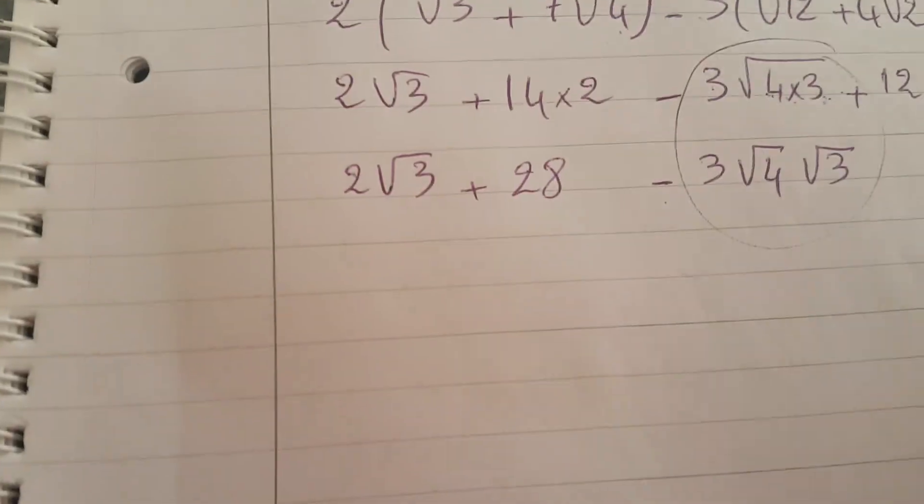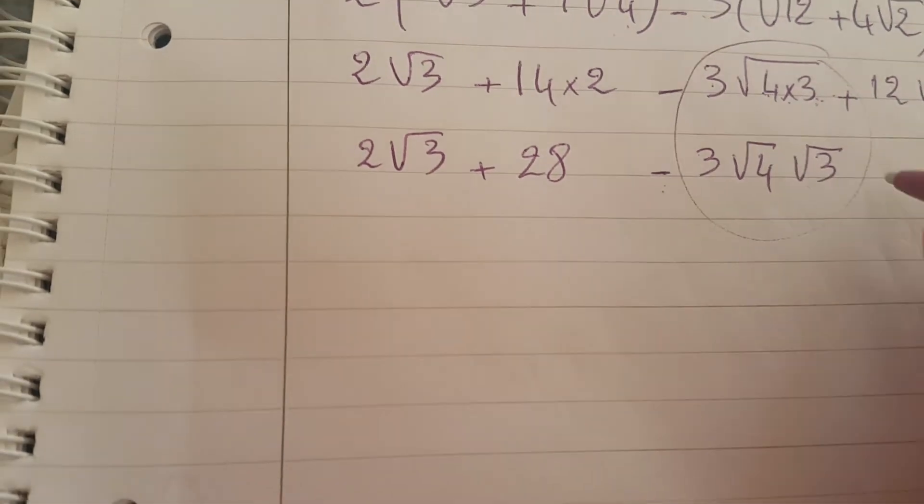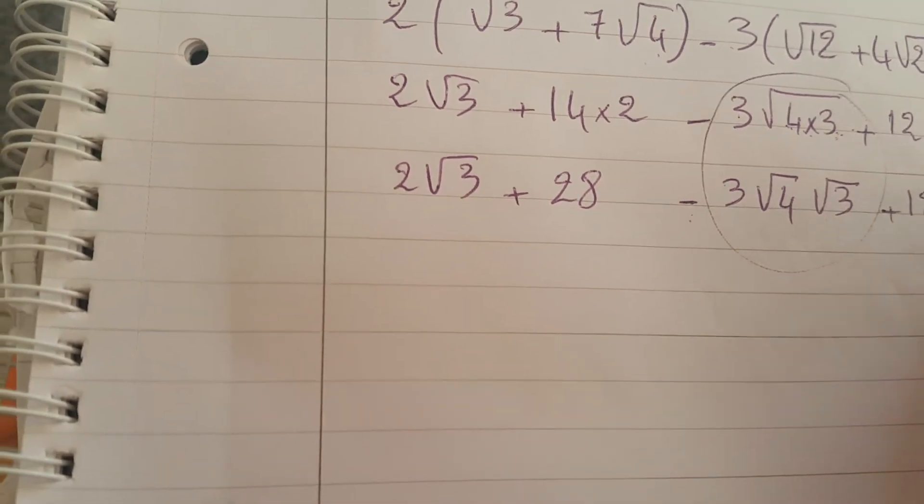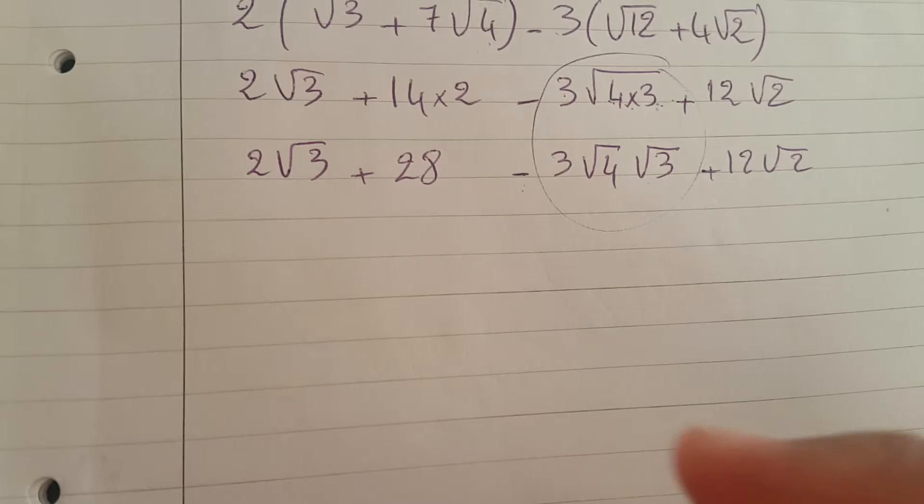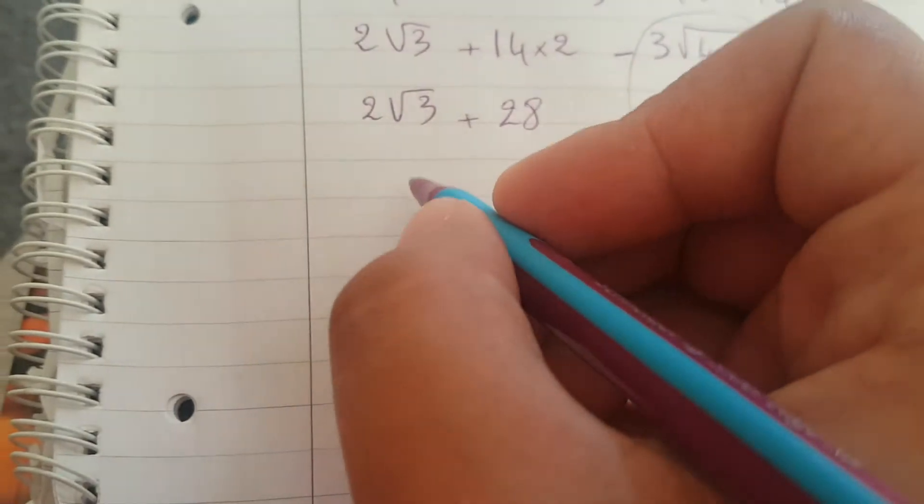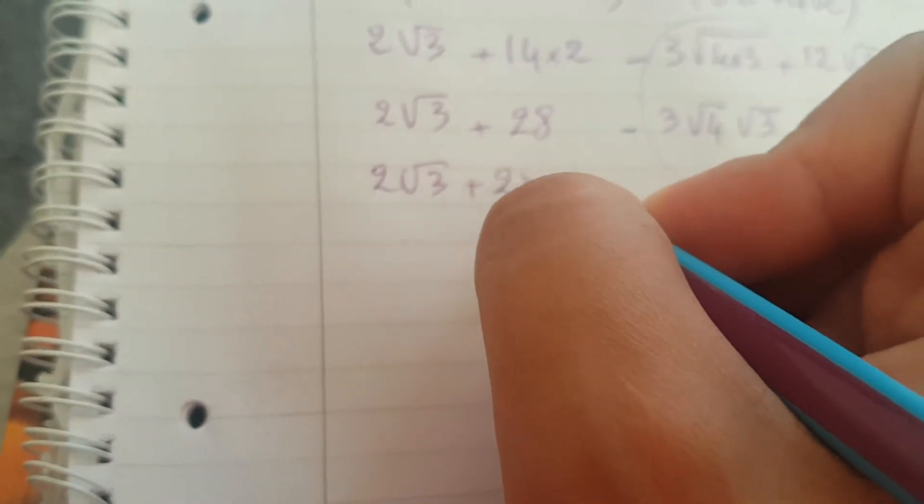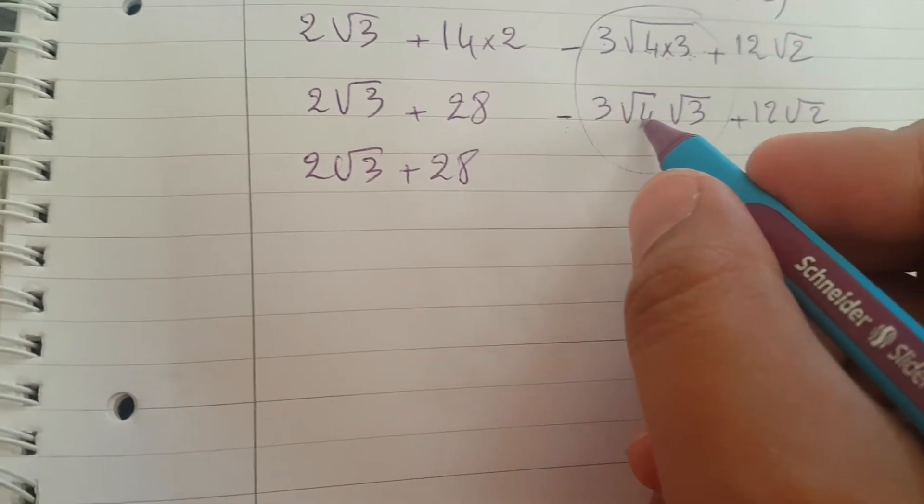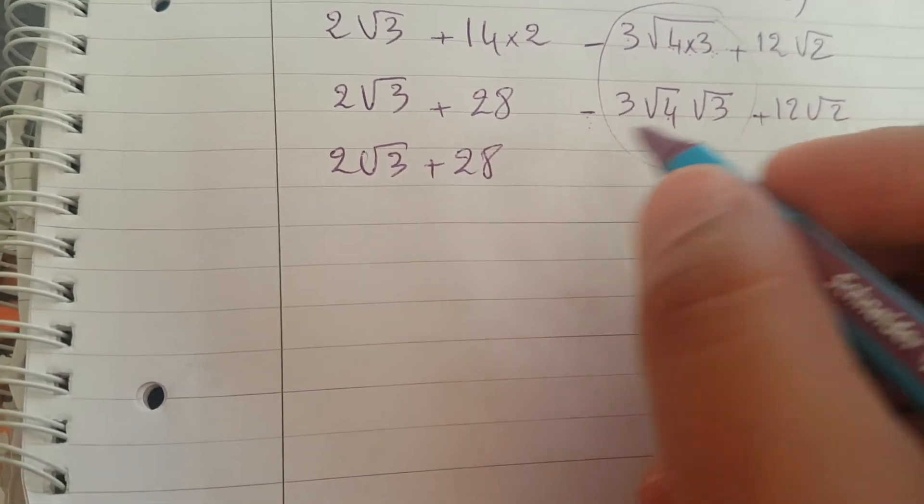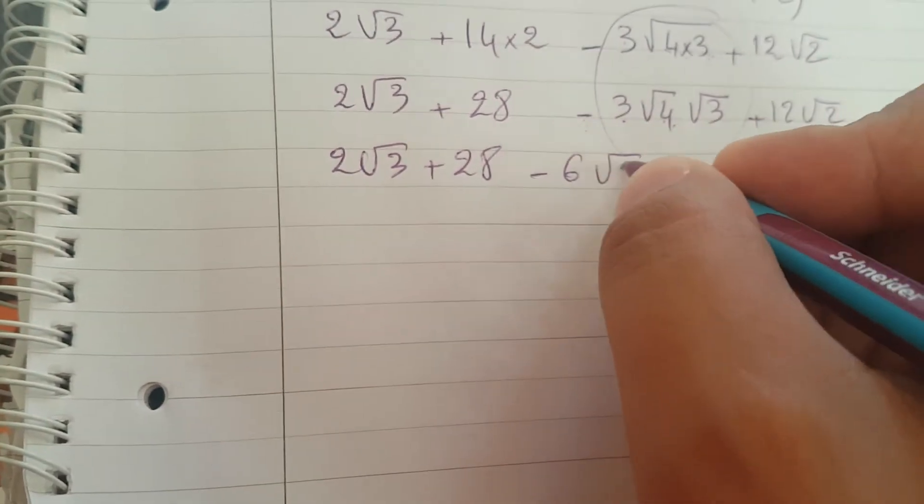So here we have subtract 3 square root of 4 square root of 3 plus 12 square root of 2. I don't know if we get any good numbers from this, it's just an example from my head. So 2 square root of 3 plus 28, square root of 4 is 2, so minus 3 times 2 is 6, minus 6 square root of 3 plus 12 square root of 2.